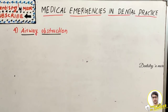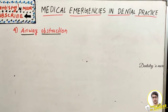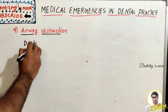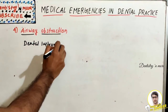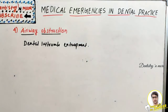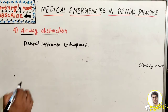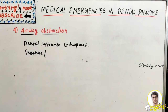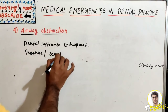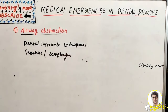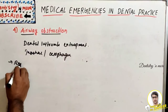Respiratory emergencies include airway obstruction, which can occur due to any pathology in the airway or entrapment of dental instruments. Instruments or even teeth can fall into the trachea. The patient typically demonstrates symptoms ranging from coughing and gagging to choking and gasping with pain. Aspirated objects may pass into the trachea or esophagus, and a chest X-ray may be needed to confirm.